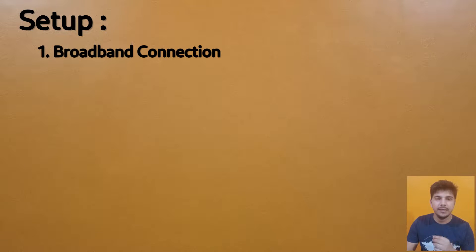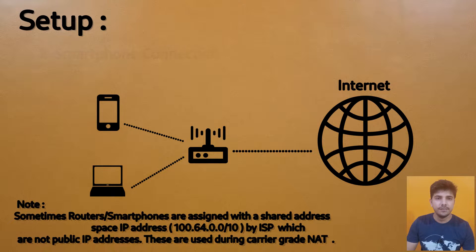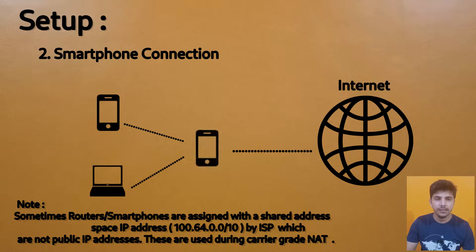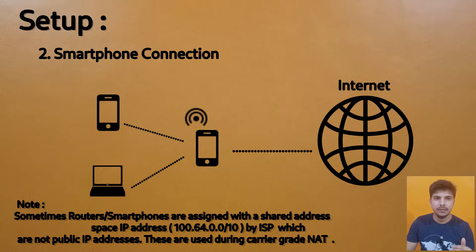Let's look at the setup for these two situations one by one. If you have broadband, you can connect your devices to the router and make sure they can reach the internet. If you don't have broadband but have a smartphone with internet, you can enable the hotspot feature and connect your devices — in that case your phone acts as a wireless access point like a router.